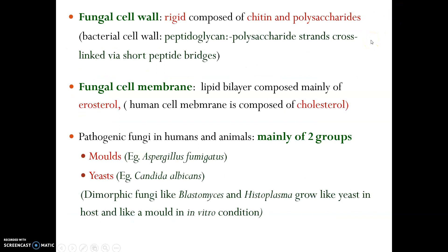So what is the fungal cell wall? The fungal cell wall is a rigid membrane composed of chitin — remember chitin, it is a very important factor. And what is the fungal cell membrane? The fungal cell membrane is a lipid bilayer composed mainly of ergosterol. The human cell membrane is mainly composed of cholesterol. So there are many antifungal agents that act against the ergosterol mechanism, so that fungal cell membrane formation does not happen and that leads to the death of the fungus.